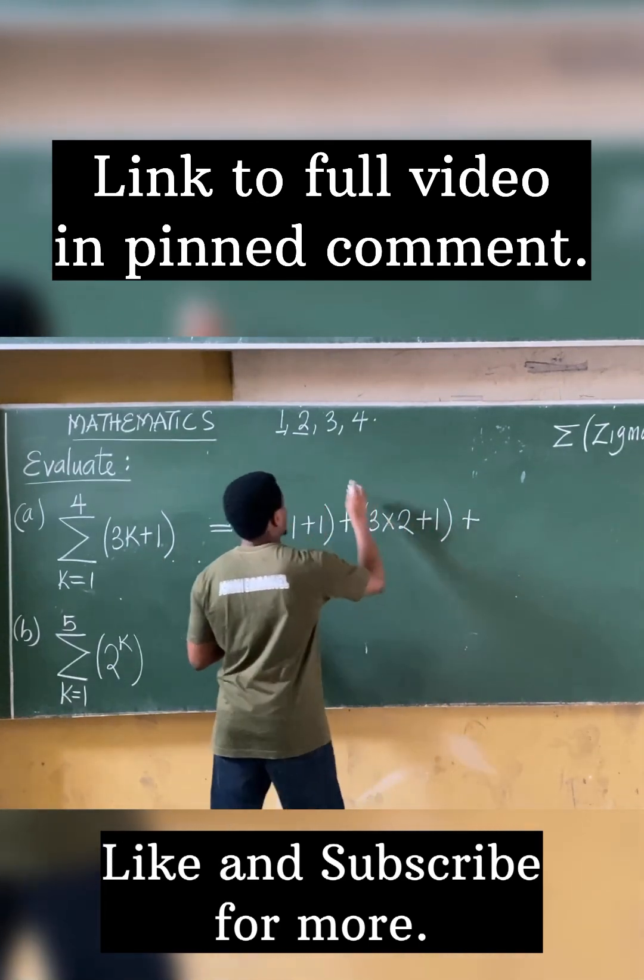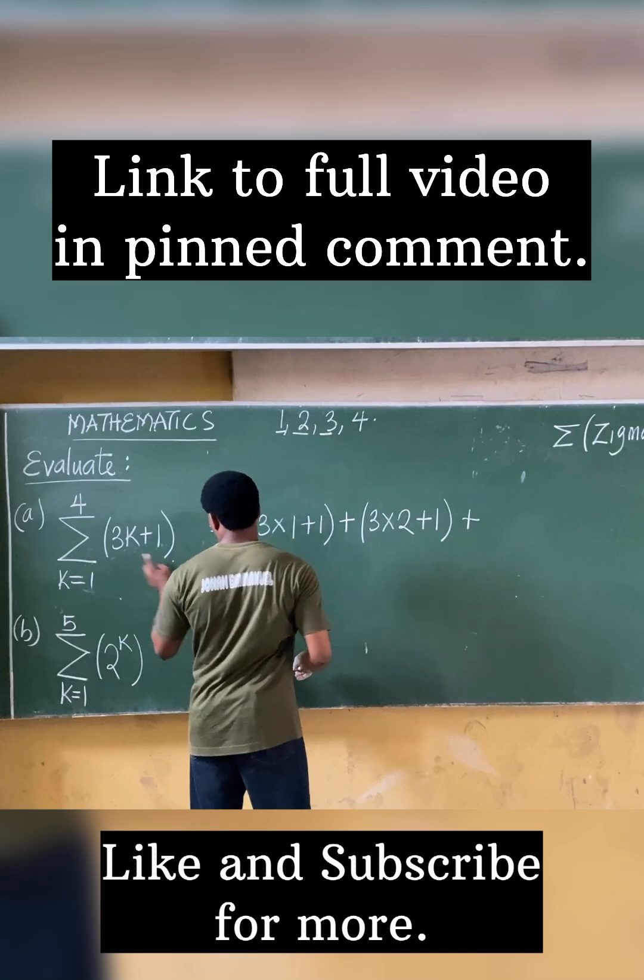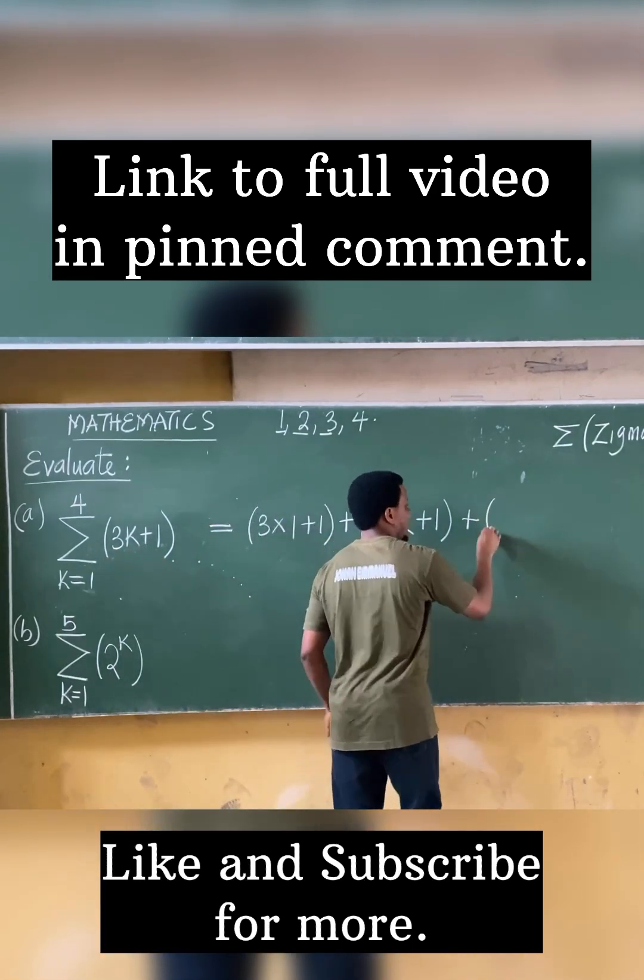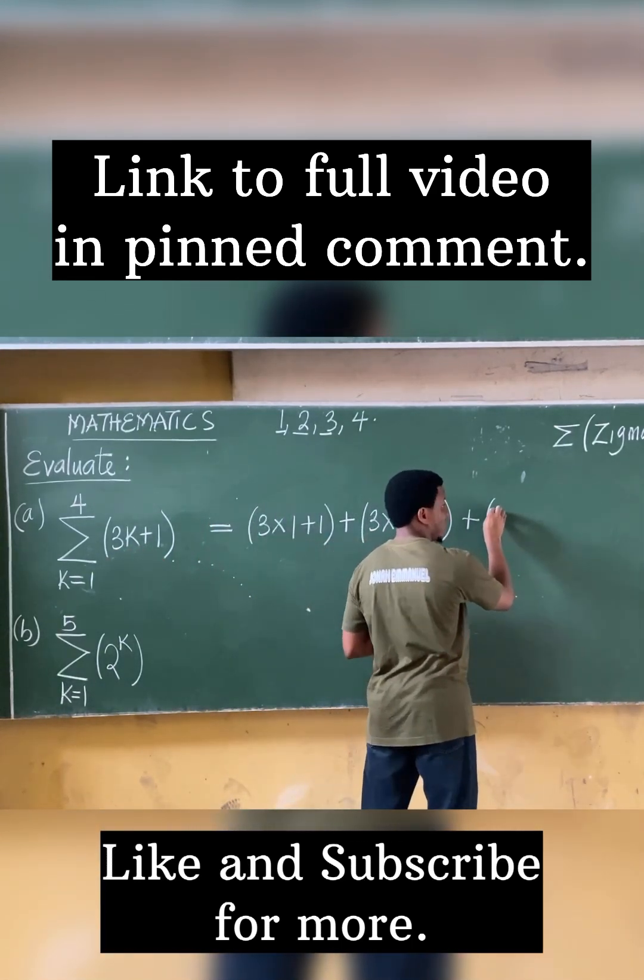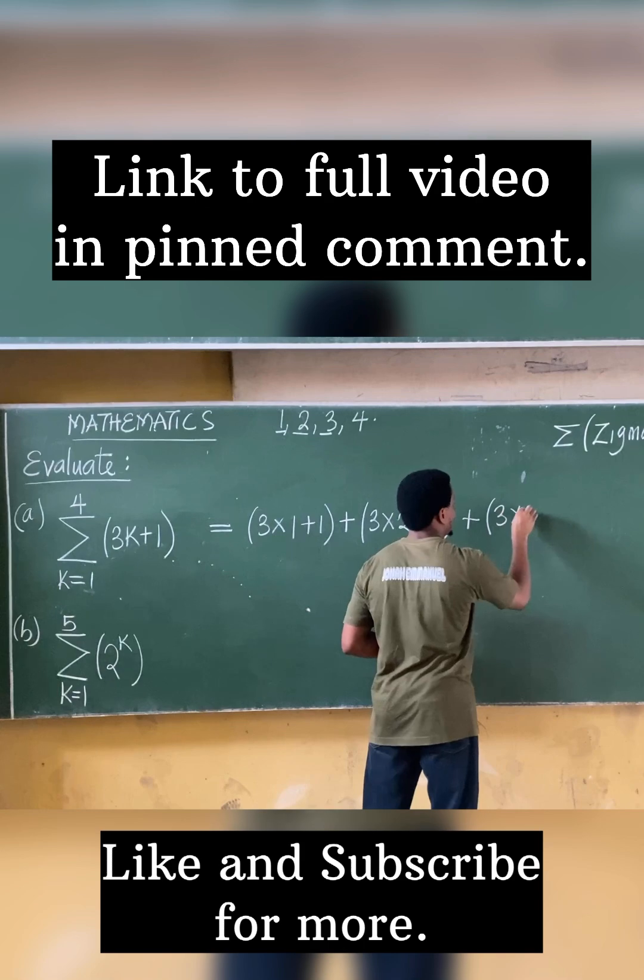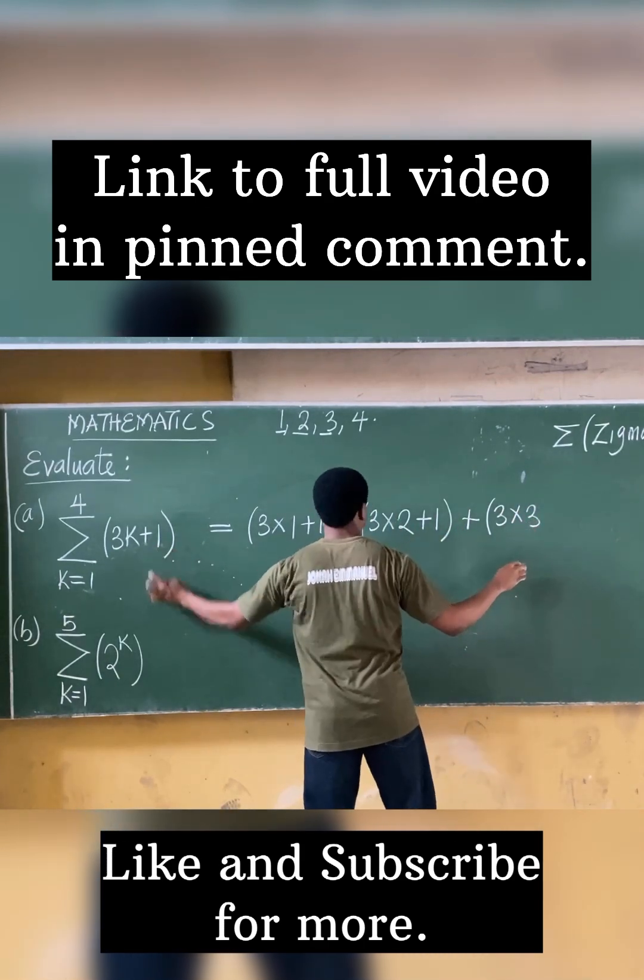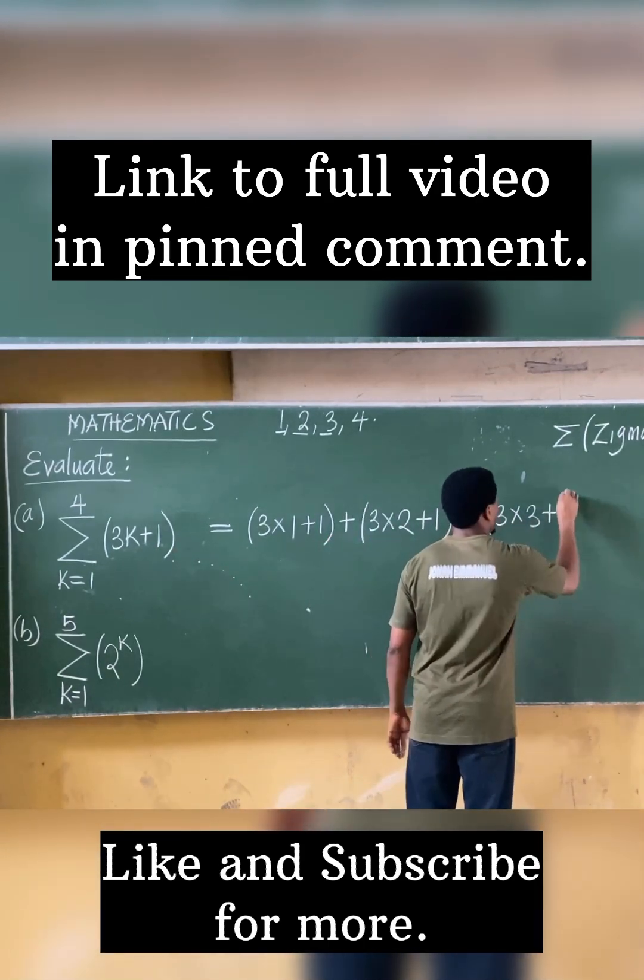Plus, I'm done with 2. Let's now take k as 3. 3k becomes 3 times k, which in this case, k is now 3. That becomes 3 times 3. Then we have plus 1.